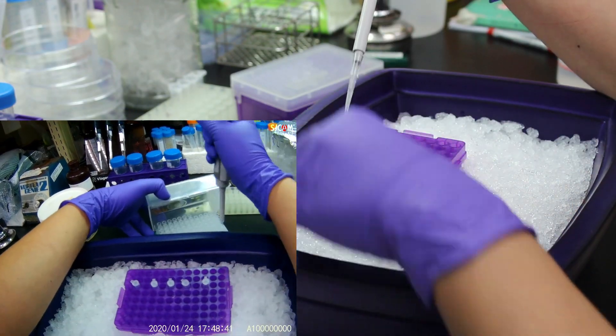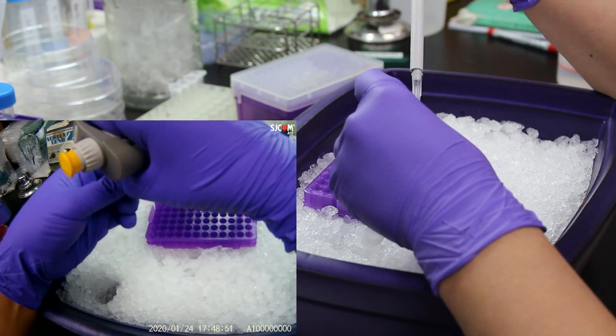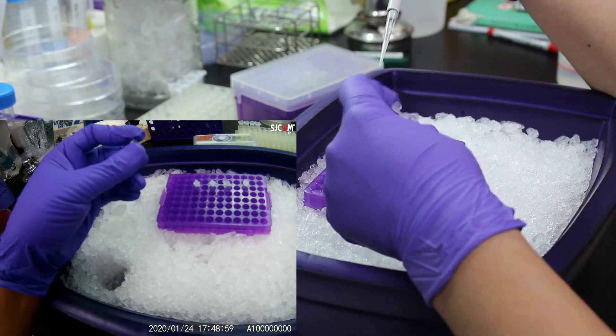Next step is to distribute the PCR mixture we have into each PCR tube. In this case, 15 microliters for each tube and a total of five tubes.